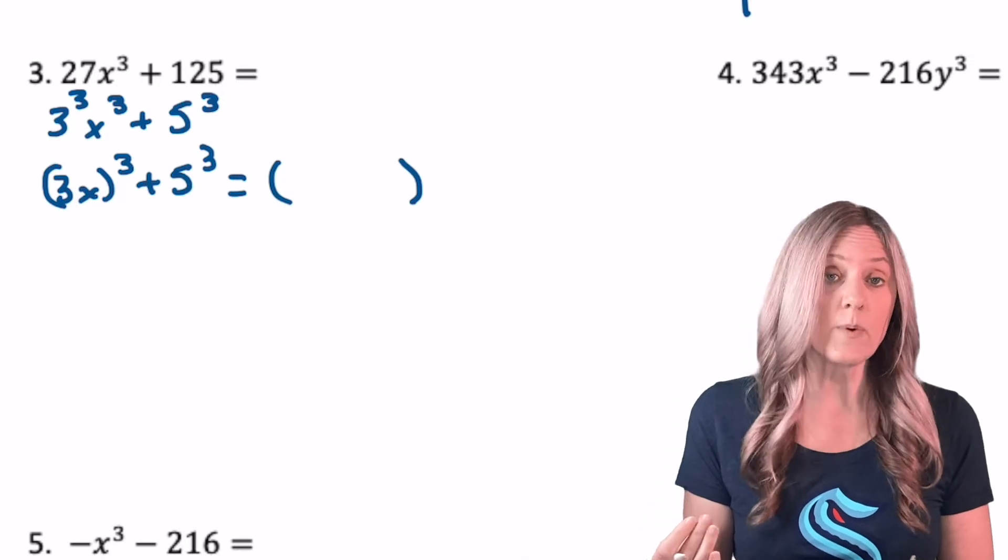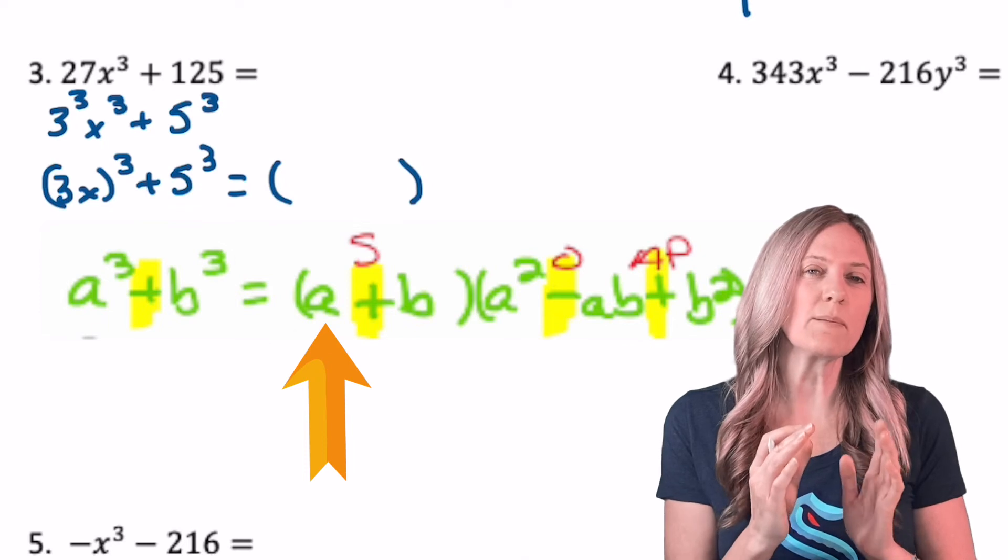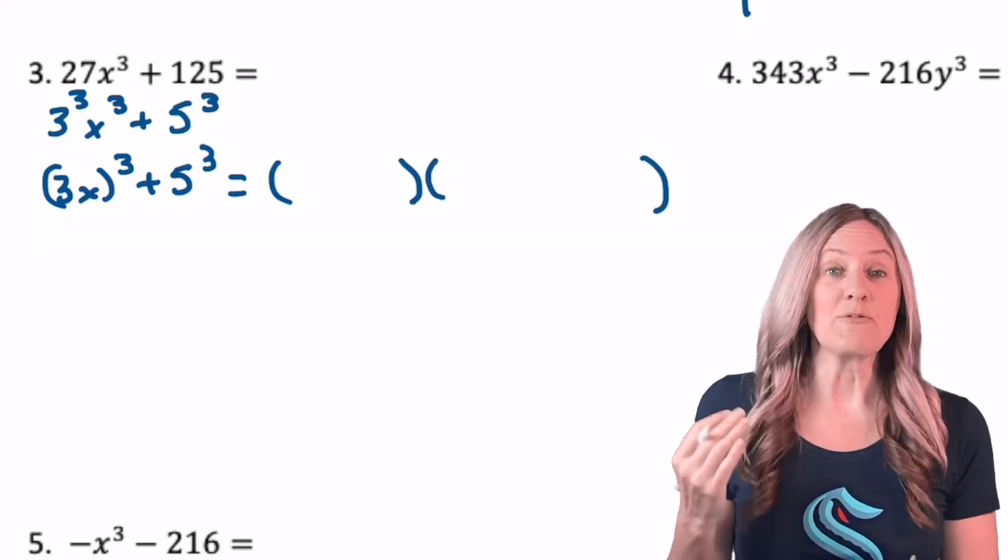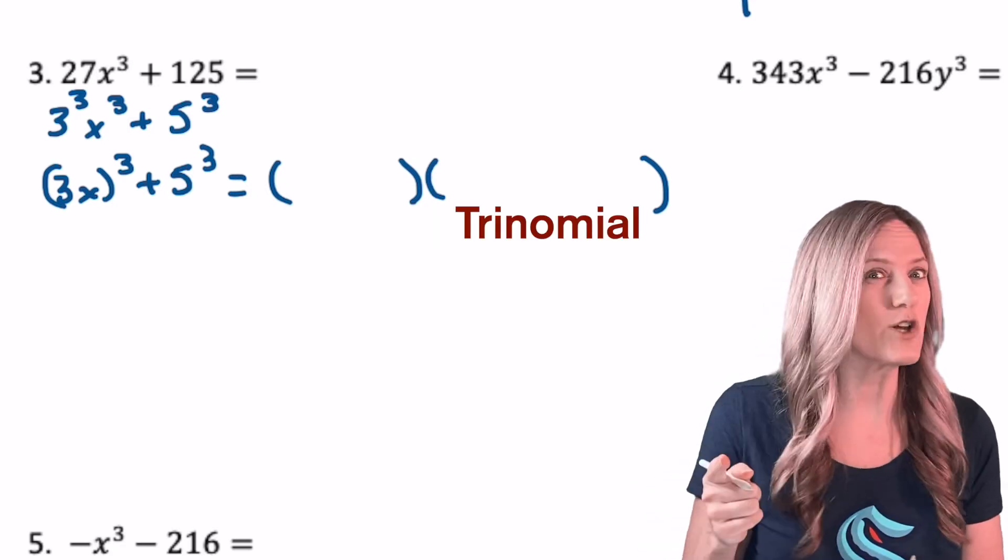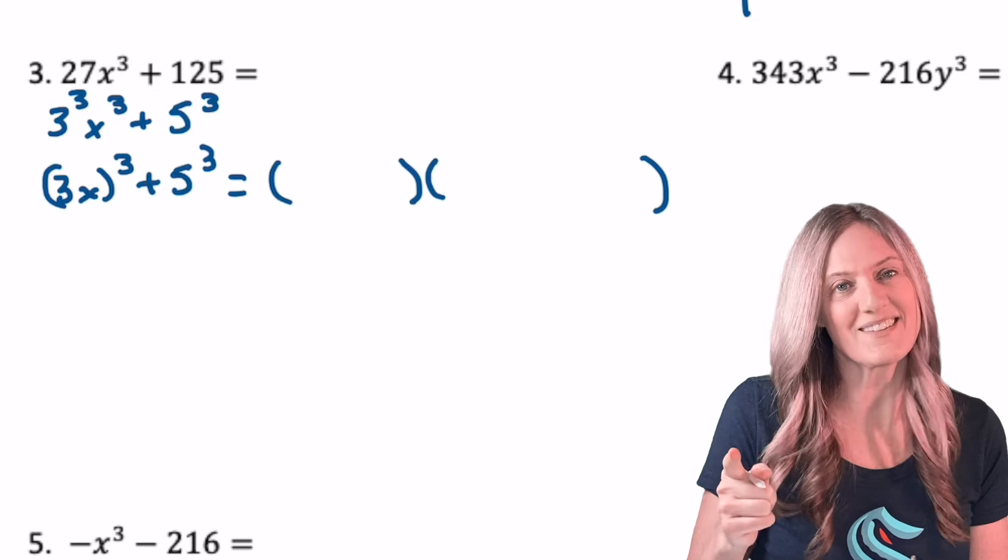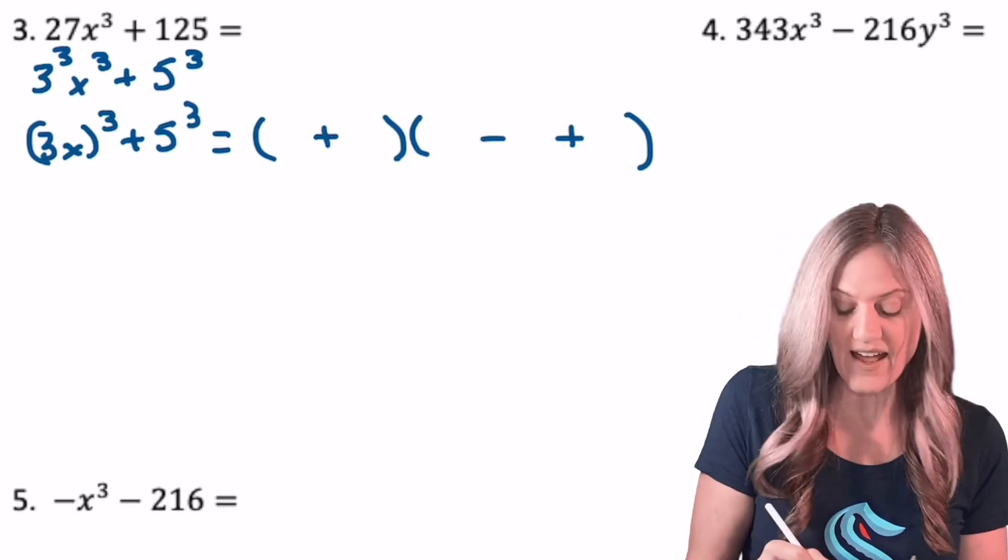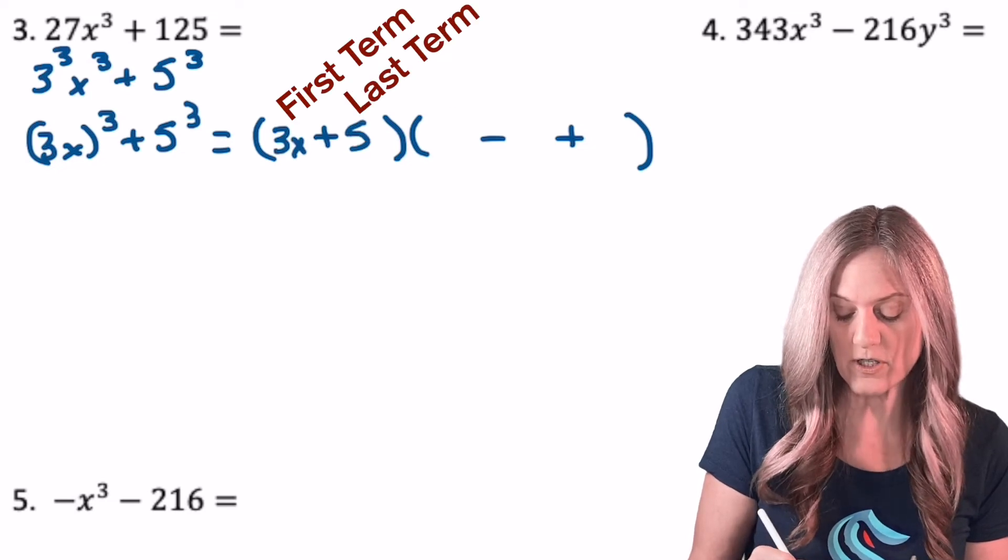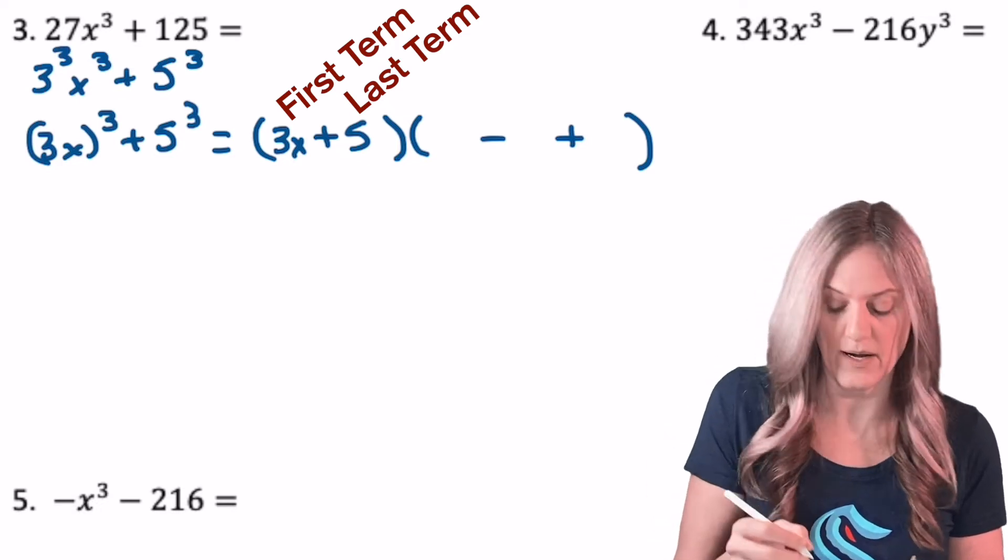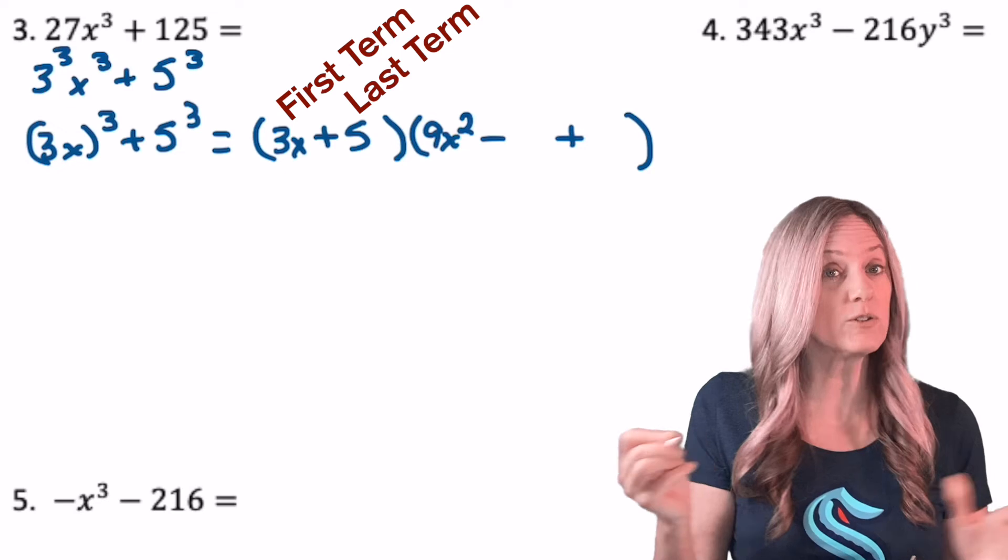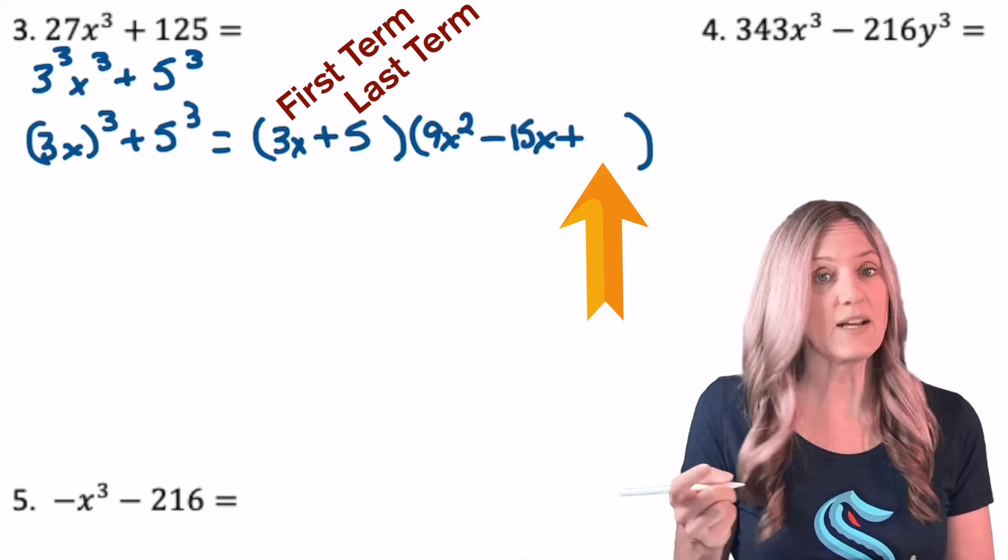To be very clear, I wrote three x in parentheses, quantity cubed. So that first term in my binomial will be a three x. Okay, remember the process. Repeat it so you get it stuck in your head. Binomial, trinomial, and then SOAP it, right? SOAP means what are the signs? Same sign, opposite sign, always positive. After I have that, three x and five, first term squared. Be careful, first term squared, three squared, x squared, so nine x squared. Multiply together, five times three x, 15x. And last term squared, five times five, 25.